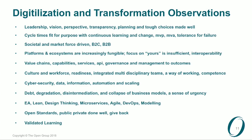Platforms and ecosystems are increasingly fungible — focusing only on your own platform is short-sighted; you must also address interoperability. Continual references emerge to value chains, value streams, capabilities, services, APIs, governance and management to outcomes, culture and workforce readiness, integrated multidisciplinary teams, cybersecurity, data, information, automation, scaling, debt, degradation of systems, disintermediation, and collapse of business models — a need for urgency and change. EA, lean, design thinking, microservices, agile, DevOps, modeling, open standards, private-public partnerships done well, and validated learning all feature prominently.